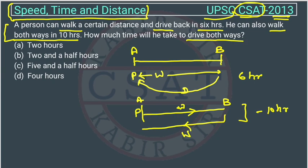So one side will be how much? One side will be half of it, any 5 hour. If this is 5 hour and total is 6 hour, this drive will be 1 hour. So one side drive is equal to 1 hour, two side drive will be equal to 2 hour.